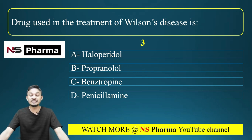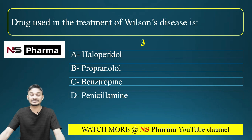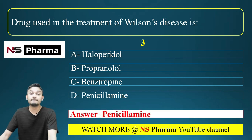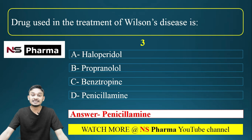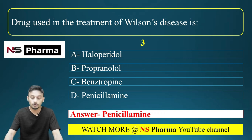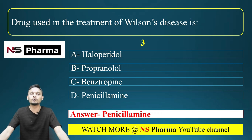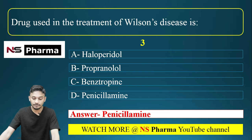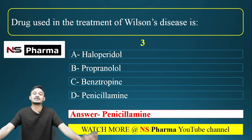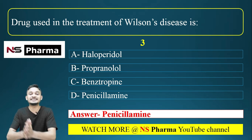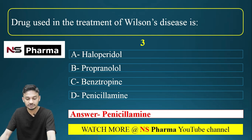The correct answer is option D, penicillamine. Penicillamine can chelate the excess amount of copper and form a soluble complex that can be easily excreted through urine.